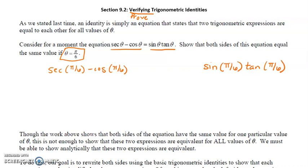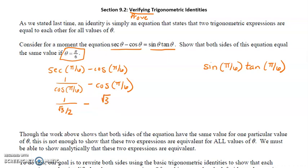Secant is the reciprocal of cosine, so we can rewrite secant as 1 over cosine of pi over 6. The unit circle may still be new, but if you're planning on AP Calc next year, you'll need to know these values by heart — especially anything in the first quadrant. Cosine of pi over 6 is the square root of 3 over 2, so this fraction becomes 1 over (√3/2), and then we subtract cosine of pi over 6, which is also √3/2.